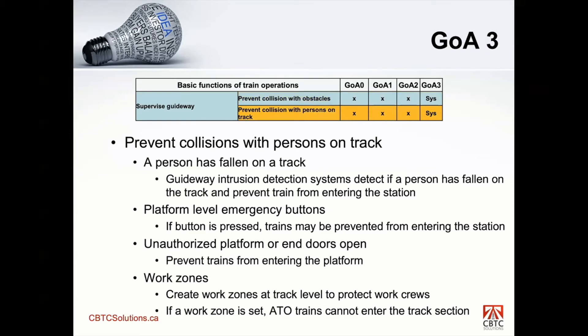The second function is to prevent collision with persons on track — so if a person has fallen on the track, the system is able to detect them. This can be accomplished by guideway intrusion detection systems: basically an infrared beam shot across the platform. If a person cuts that beam and falls on the track, the system will be aware of it, close the station, and trains will be prevented from entering. There are also platform-level emergency buttons — if a button is pushed by a passenger or operation staff, the station is closed. If any platform doors open when they're not authorized to, the station is closed and trains are prevented from coming in.